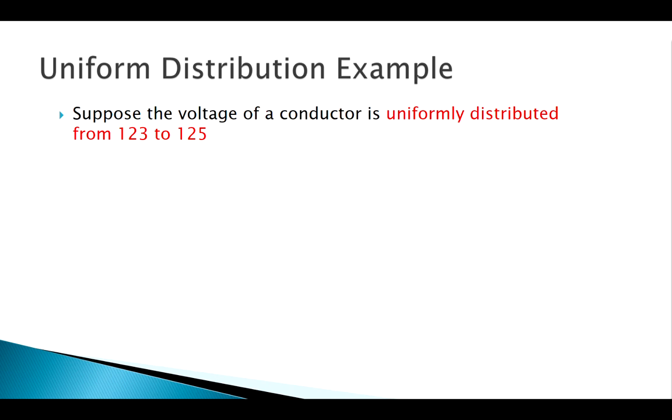Welcome back. Let's see an example applying these basic ideas of continuous random variables and specifically the uniform distribution. The uniform distribution is usually just a simple square or rectangle, pretty easy to work with using basic concepts of geometry. Say we have the voltage of a conductor uniformly distributed from 123 volts to 125 volts.